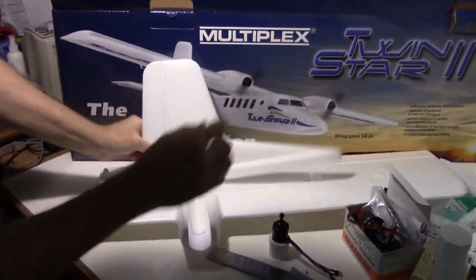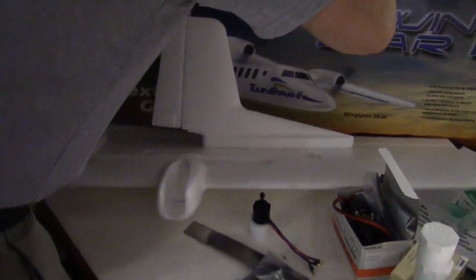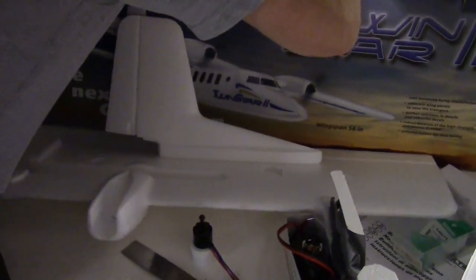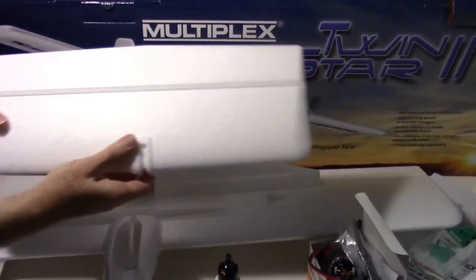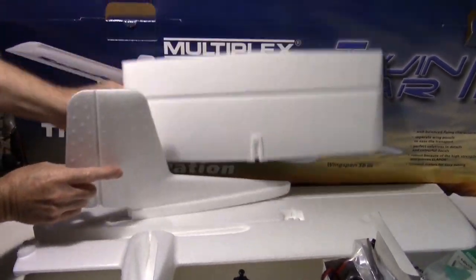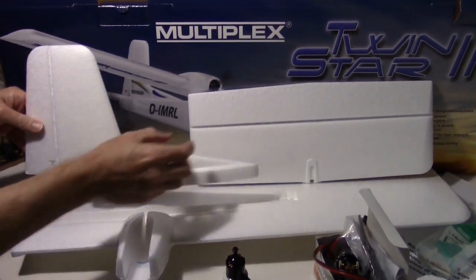There's the tail for it right there. Of course it doesn't go on that piece. That'd be kind of silly to glue it on there. Here is the horizontal stabilizer with elevator.